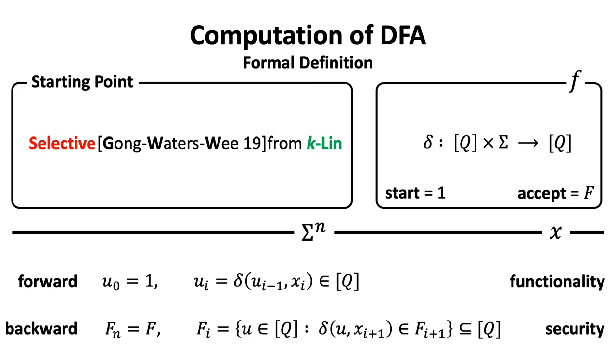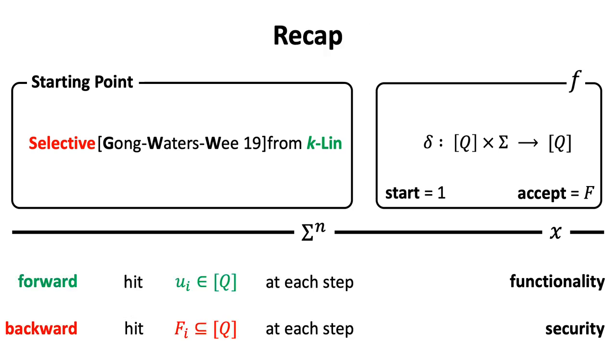We can write down every state the machine will reach at each step recursively in general. Then, we can easily check the property I just mentioned. With the definition and the properties for forward and backward computation of DFA,